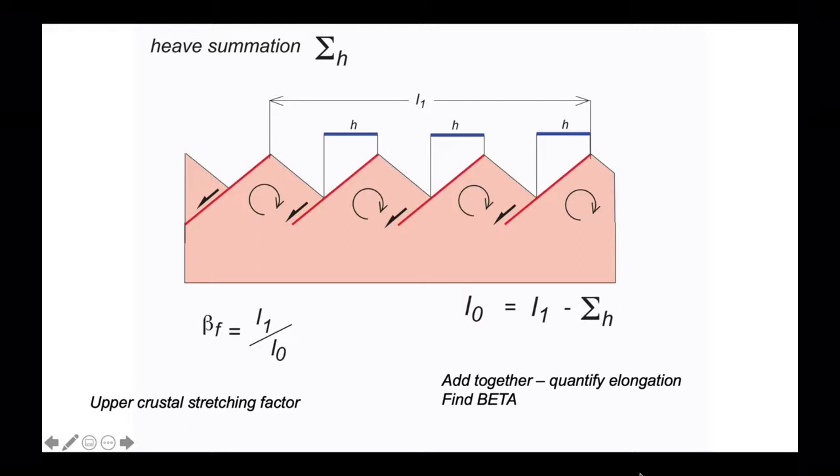That is distance L1, the modern length, and we can measure the heaves experienced by each of the faults. If we take the sum of those heaves away from the present day length from across that area of crust, then we find the original length of that crust, L0.